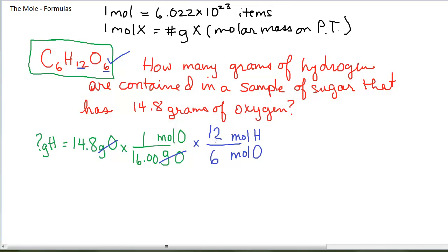Numerically, if you wrote it as 2 to 1, you'd get the same answer, but you might be confused when you come back to look at it later. I need one more step because I'm going to grams of hydrogen, so I need moles of hydrogen on bottom to cancel, grams of hydrogen on top. This is the molar mass of hydrogen from the periodic table: one mole is 1.01 grams. I punch this in my calculator.